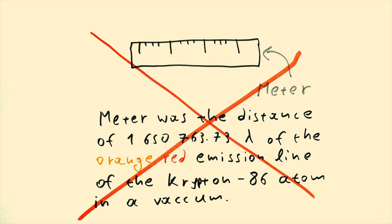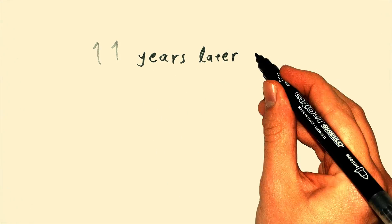In other words, there wasn't something wrong with the experiment that resulted in the 2.2 meters per second difference. It was the definition of the meter that was bothering us. So 11 years later, in 1983,